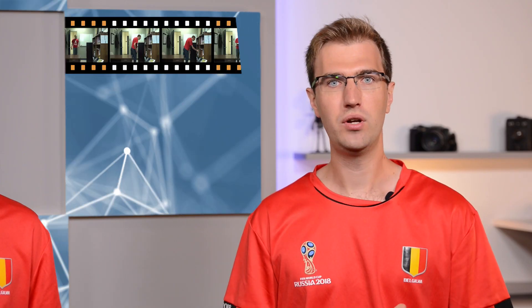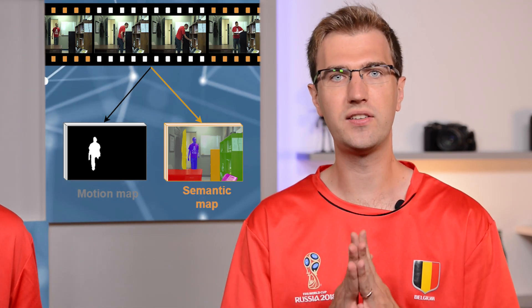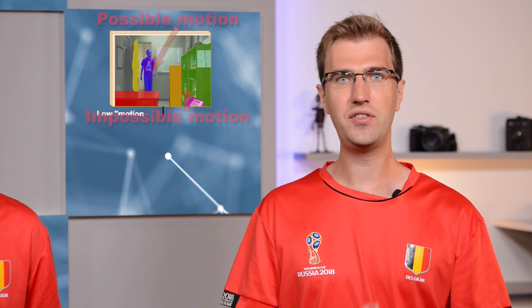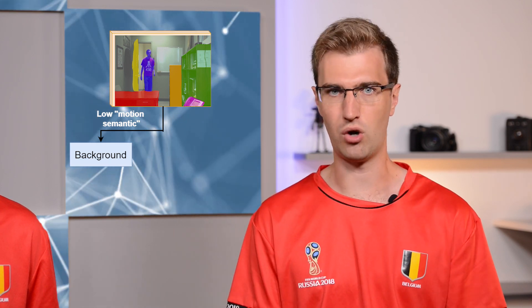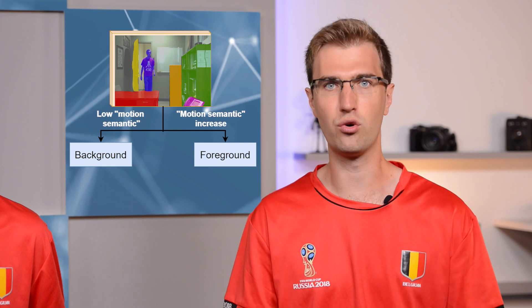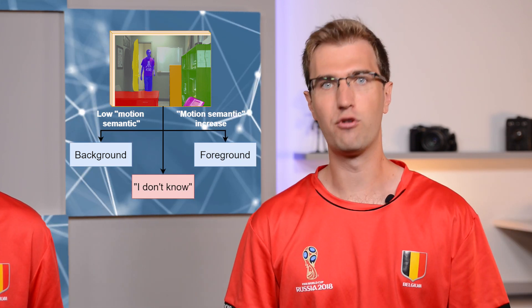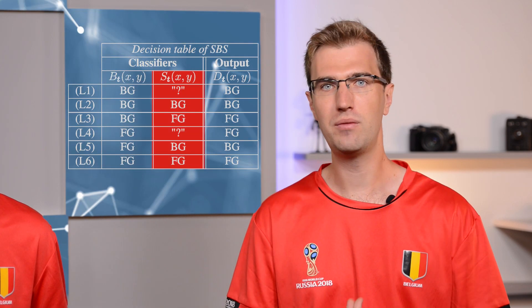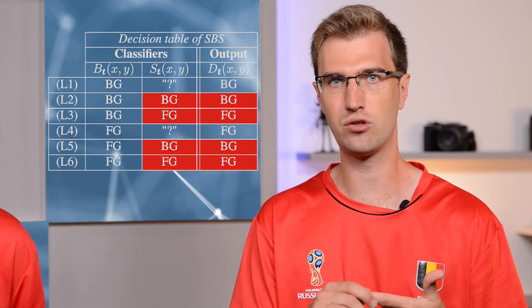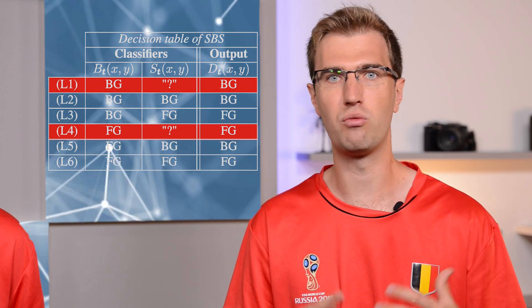Here is how it works. For each frame, two signals are computed: a motion detection map and a semantic map. The semantic map corresponds to a semantic segmentation of the frame — each pixel is classified into one category: humans, cars, trucks, whatever the pixel belongs to. Then, a semantic-based classifier decides for each pixel whether it belongs to an object that might be in motion. If the semantic information is too low, the pixel is classified as background. If the semantic information has increased compared to a semantic background model, the pixel is classified as foreground. In other cases, the classifier gives an I-don't-know class for the pixel. Finally, the background subtraction and the semantic classifier are combined with a set of rules: the semantic classifier imposes its choice whenever it takes a foreground or background decision; only when it doesn't know does the background subtraction get listened to.